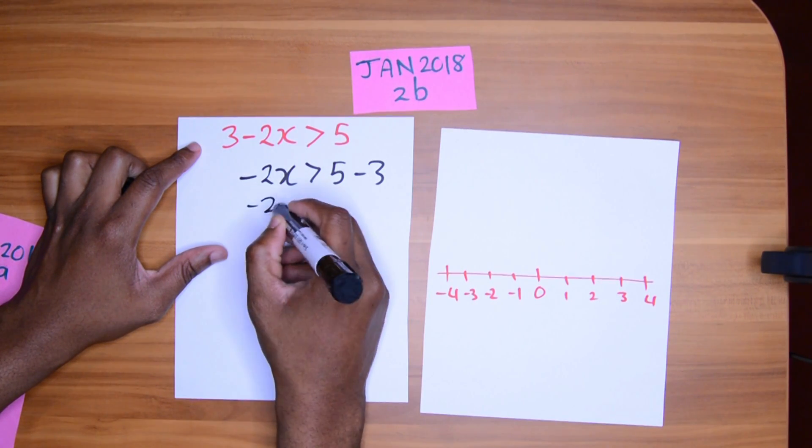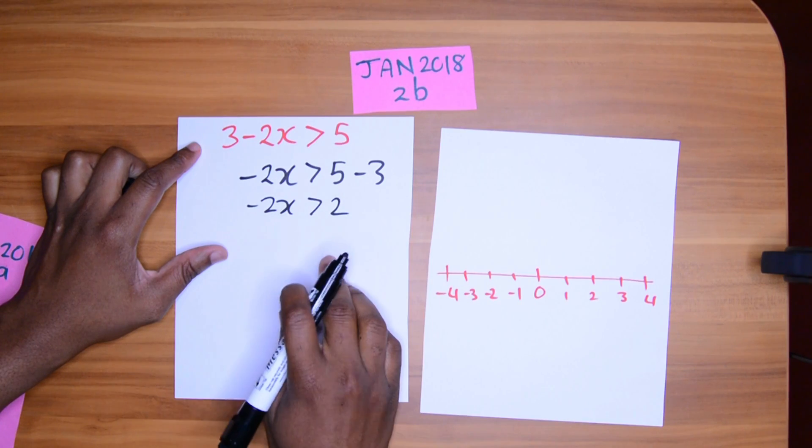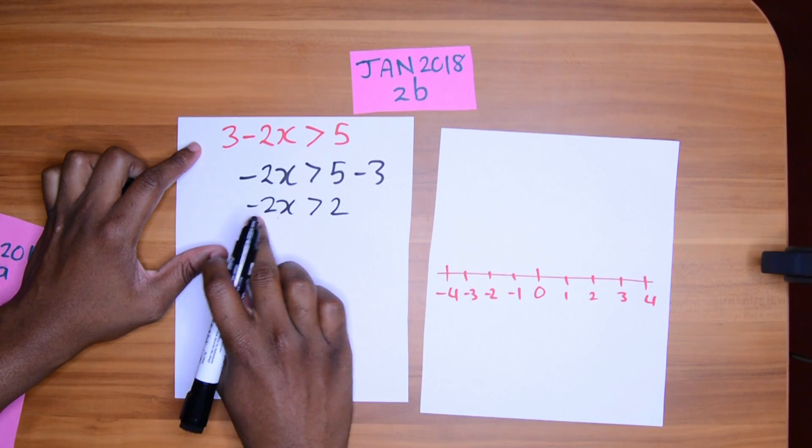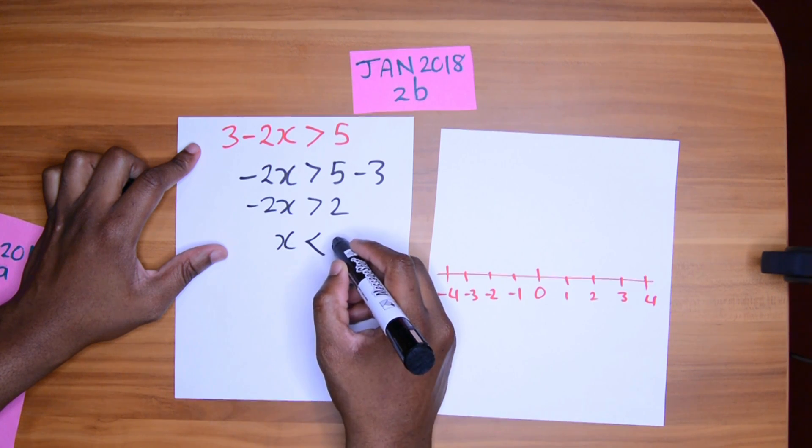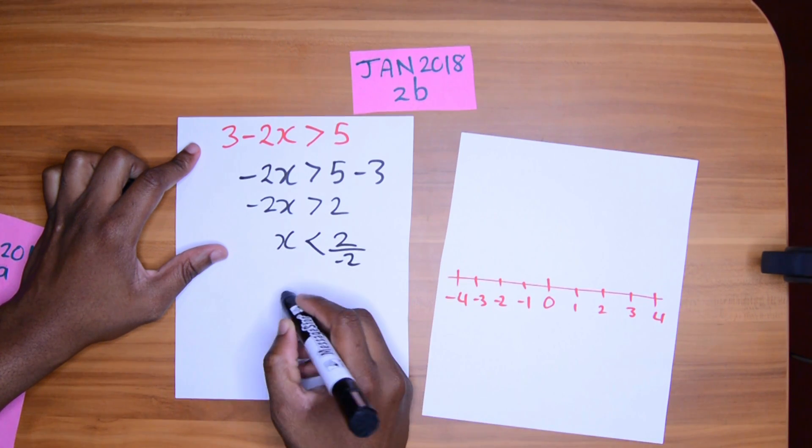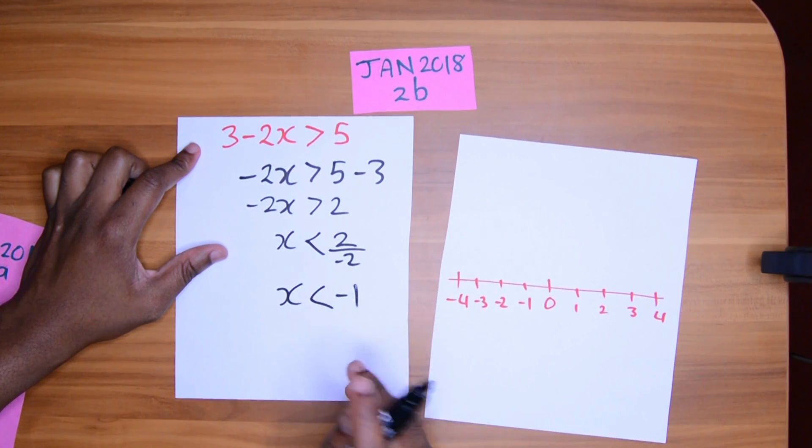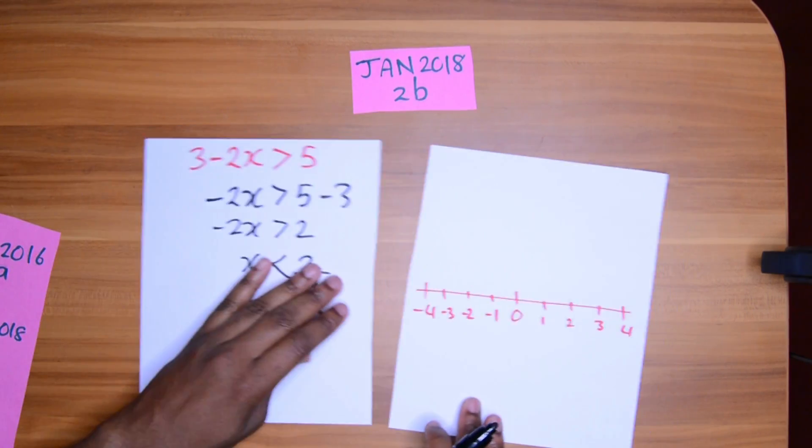This is going to be 2. 5 take away 3 is 2. Then we need to bring across this negative 2. Remember that if we divide by a negative number, the sign must switch. The answer is that. 2 marks. Never gotten 2 marks faster than that before.